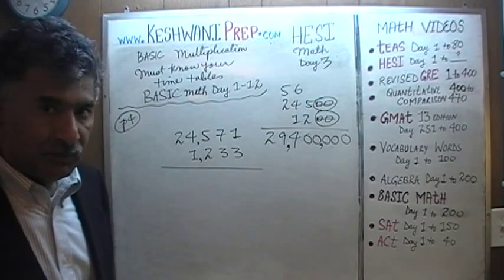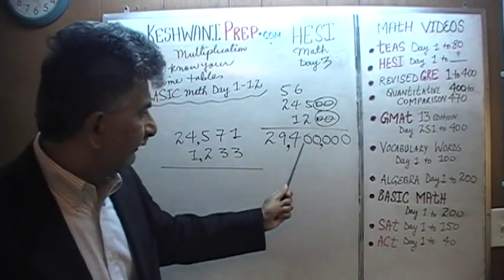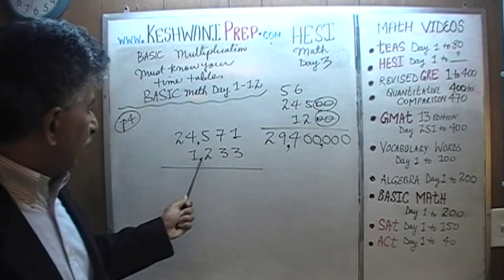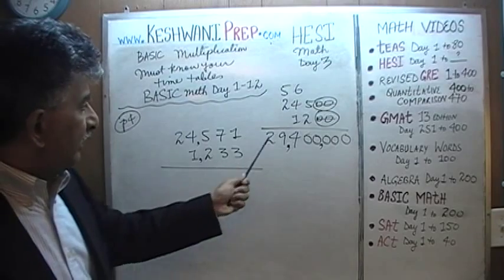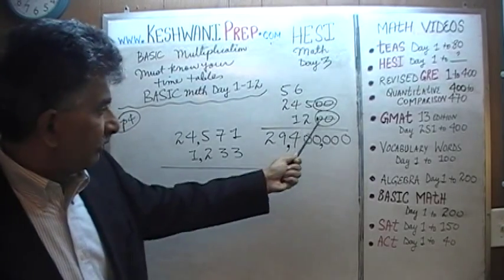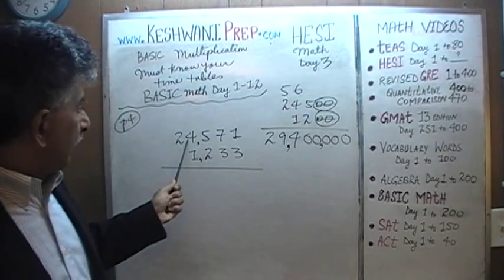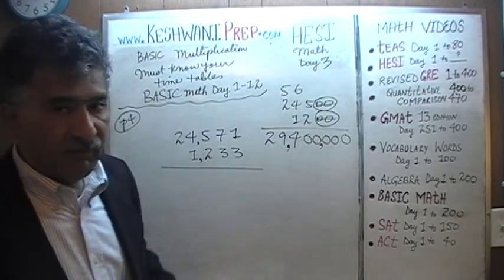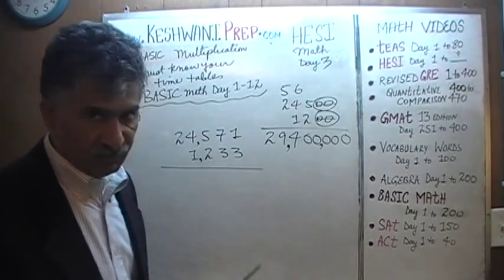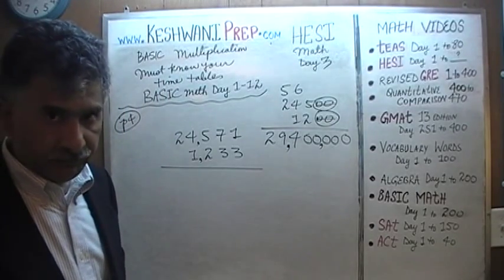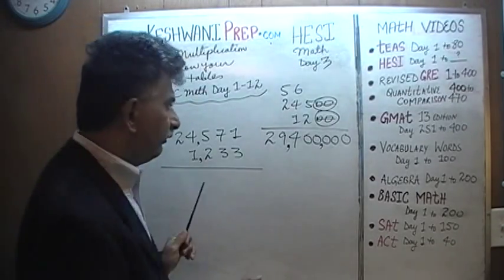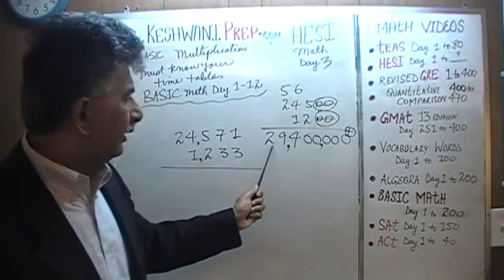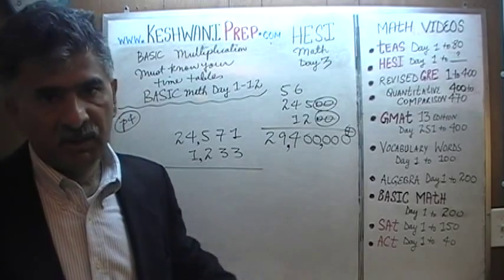The last thing we have to do is ask ourselves: is there an underestimation or an overestimation? Well, we don't have 1,200 — we have 1,233. We put down 1,200, so that's an underestimation. We have 24,571 and we pretended it was 24,500 — so this is also a clear underestimation. The correct answer, whatever it is, is going to be slightly more than 29 million, perhaps around 30 million.